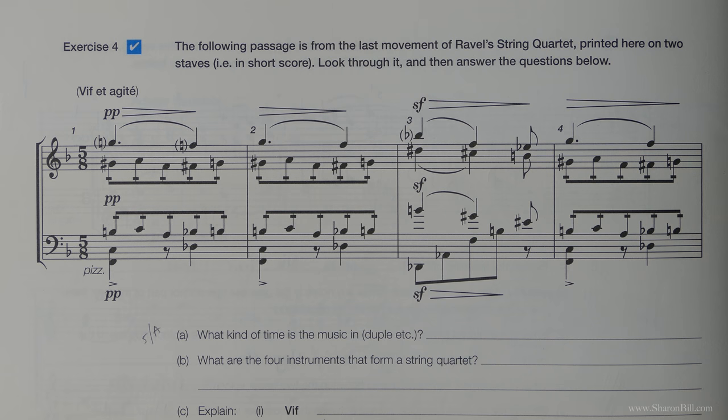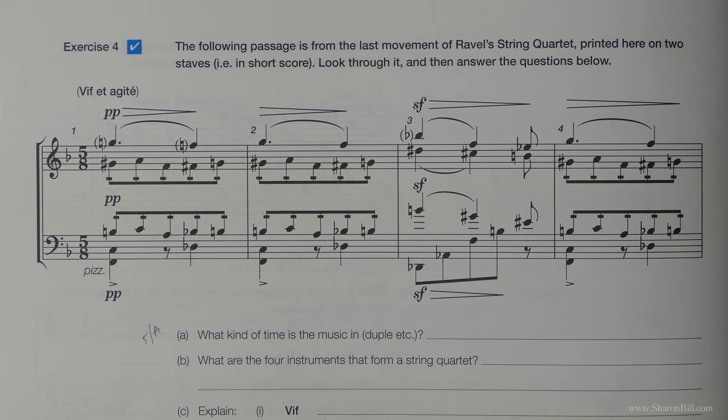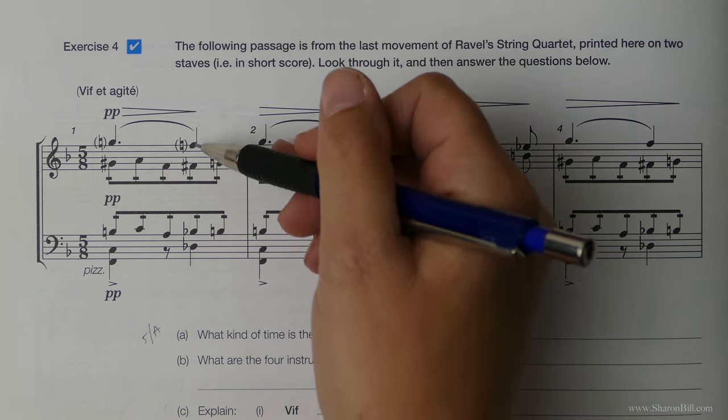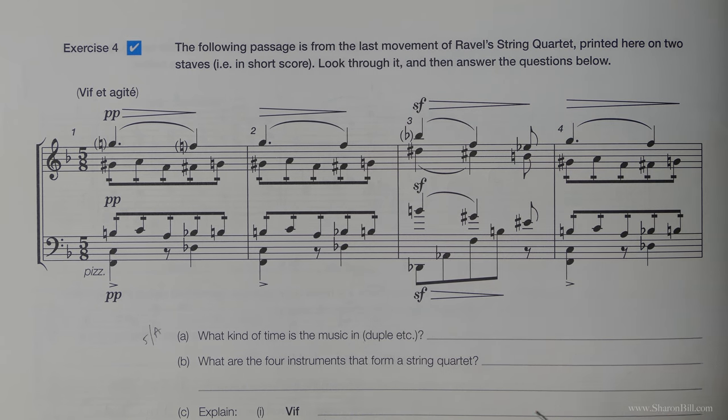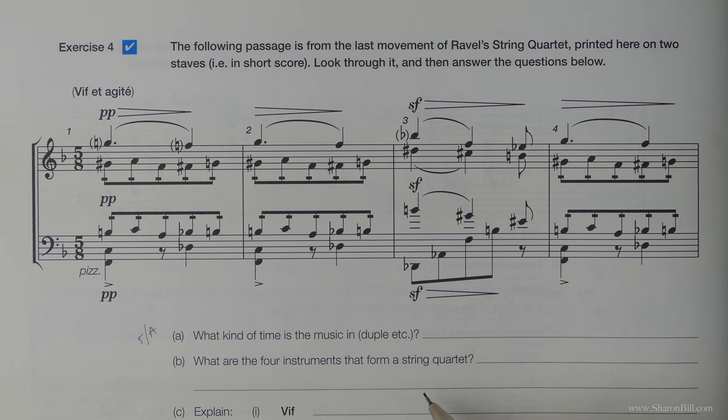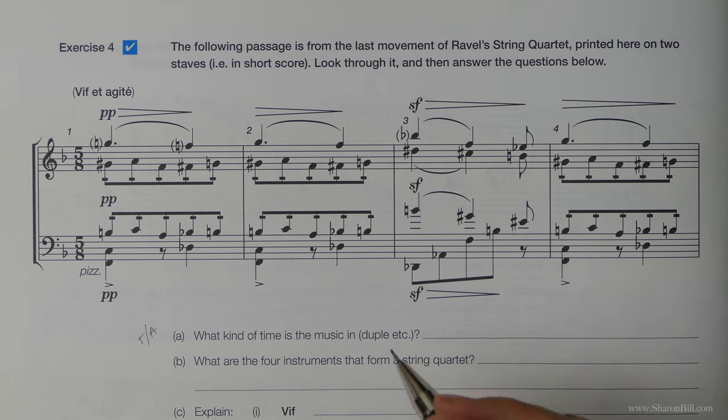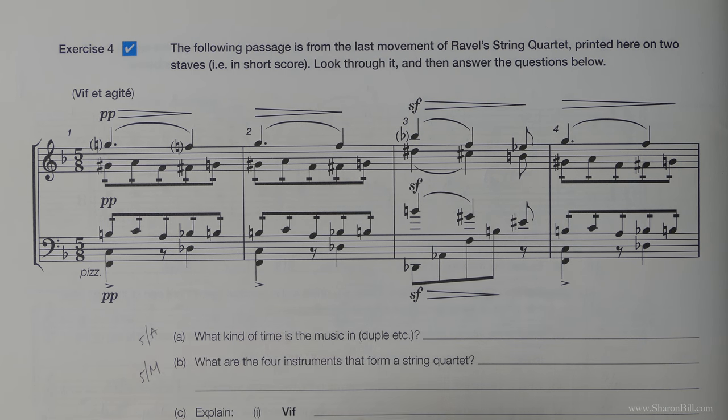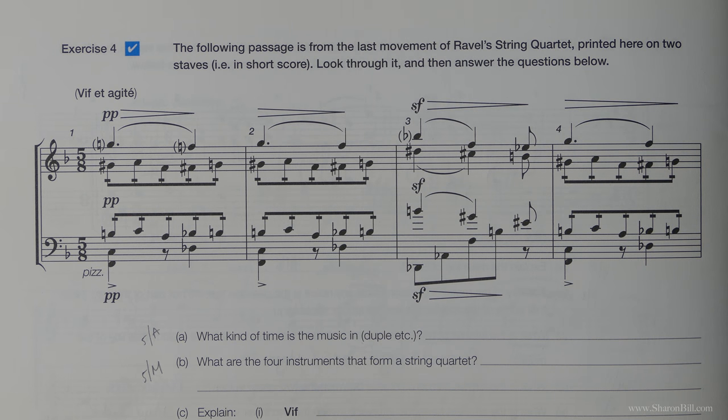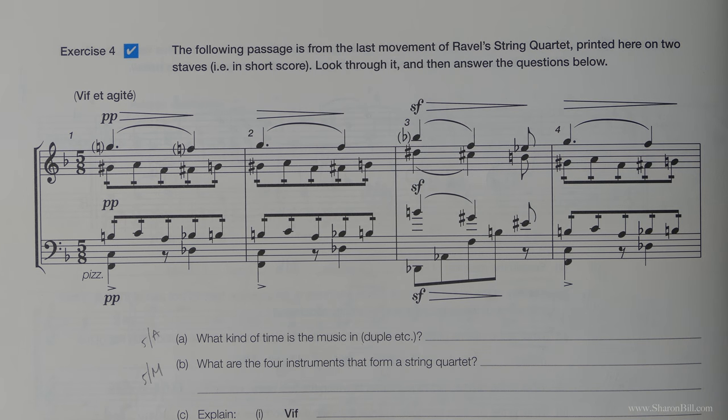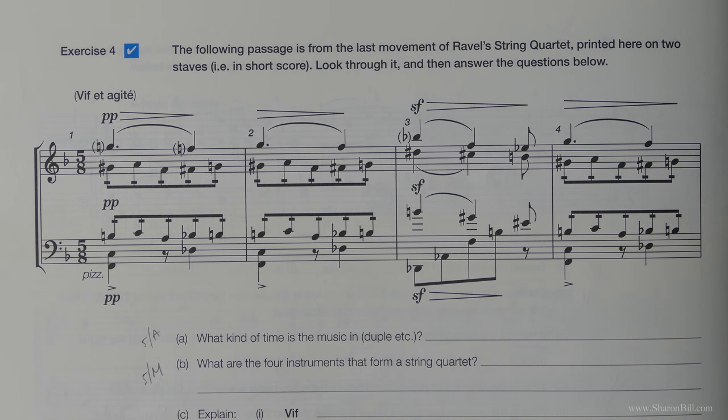We're asked just the general information. What are the four instruments that form a string quartet? And that's what we've got here down into a closed score in a condensed form. You get a bit of a hint of that in grade five, section M. But it's just a bit of a general knowledge question. So have a crack at it. If you don't know, just guess and you will learn by your mistakes when we go through this and discuss it together.